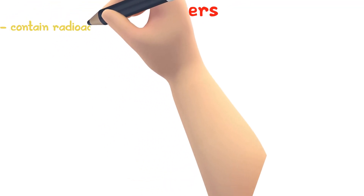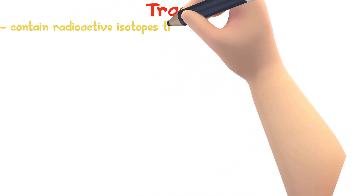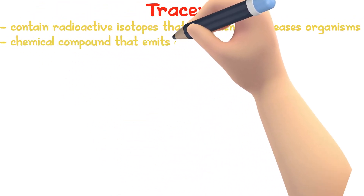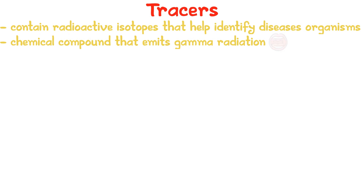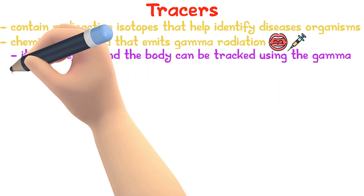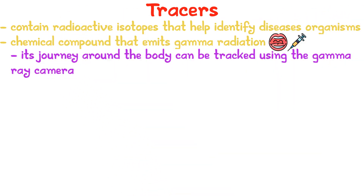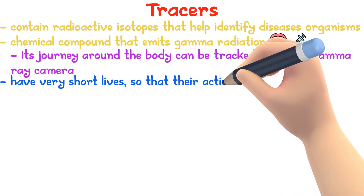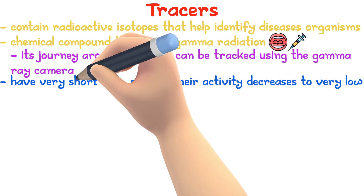Tracers contain radioactive isotopes that help identify diseased organs. A radioactive tracer is a chemical compound that emits gamma radiation, which is taken orally or injected, and then its journey around the body can be tracked using a gamma ray camera. Many different radioactive isotopes are used for tracers, but it is important that these isotopes have a short half-life so that the activity decreases to very low levels within a few days.